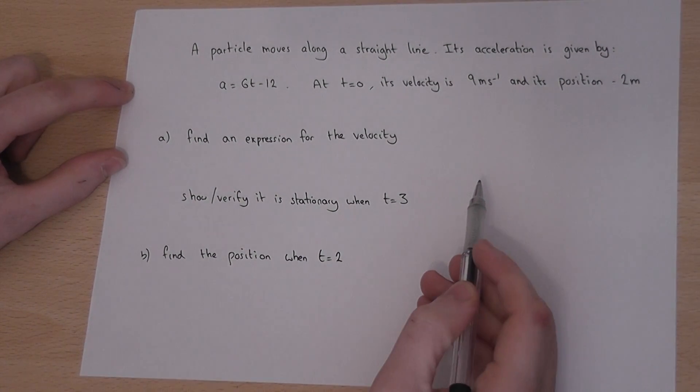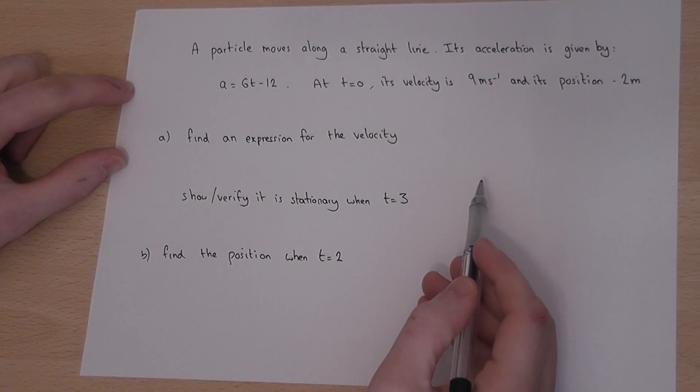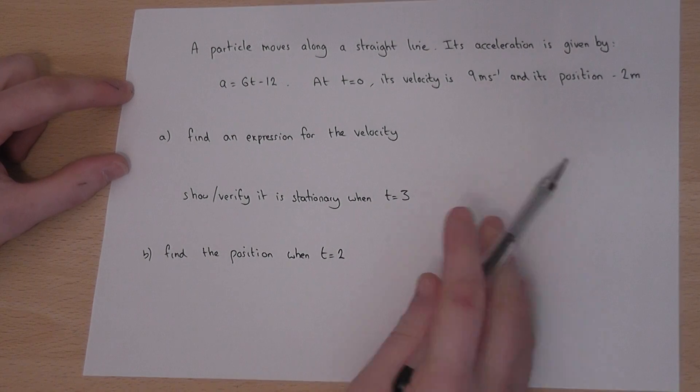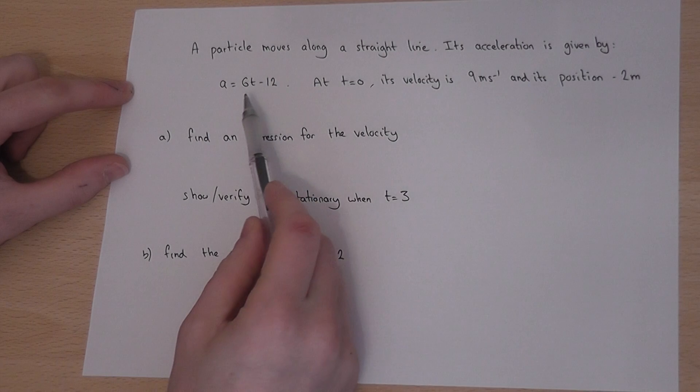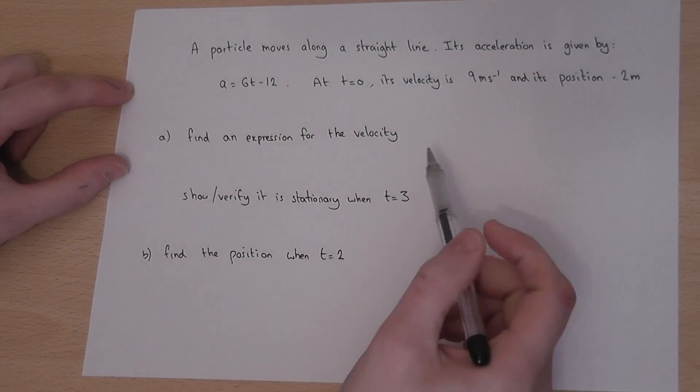This video looks at the link between acceleration, velocity and position. We're told a particle has an acceleration at a given time as a equals 6t minus 12.